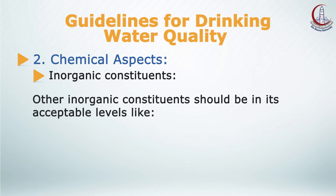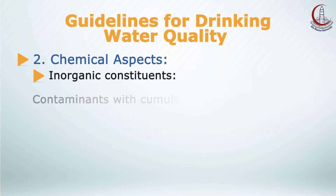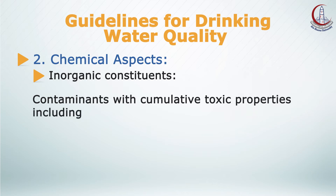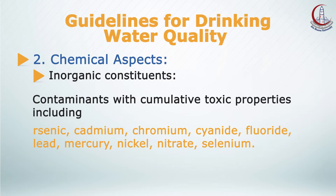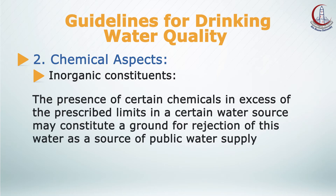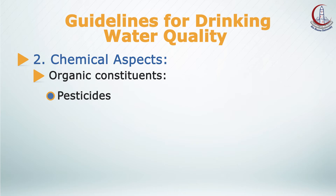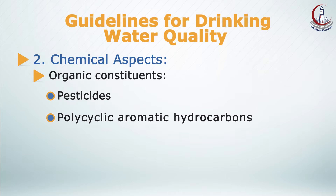Other inorganic constituents should be within acceptable levels, such as aluminium, copper, iron, manganese, sodium, sulfate, and zinc. Contaminants with cumulative toxic properties include arsenic, cadmium, chromium, cyanide, fluoride, lead, mercury, nickel, nitrate, and selenium. The presence of certain chemicals in excess of prescribed limits may constitute grounds for rejection of a water source for public health use. Chemical aspects also include organic constituents such as pesticides formed of chlorinated hydrocarbons and their derivatives, and polycyclic aromatic hydrocarbons.